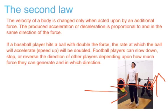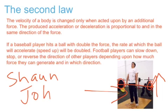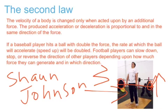A football player can also slow down, stop, reverse, or change direction. A good example is Shawn Johnson — his example is how he can sidestep from side to side and change direction. That's another good example of being able to generate force in certain directions.